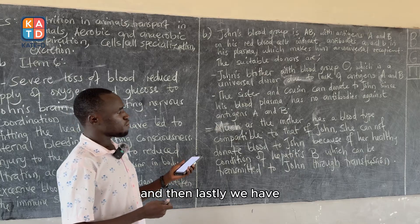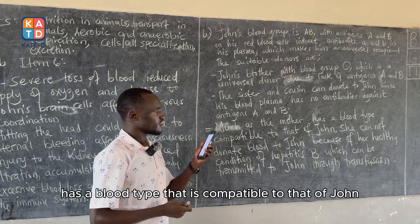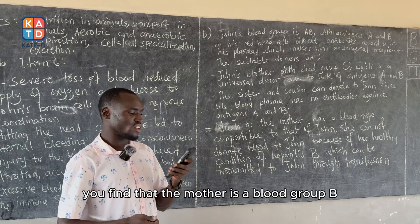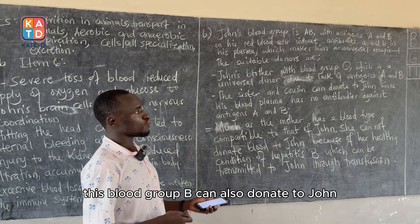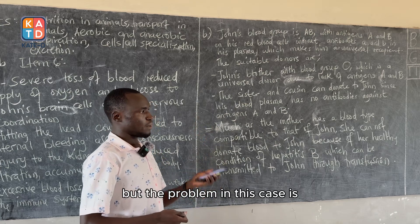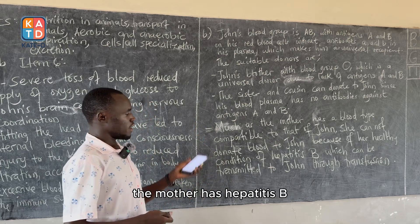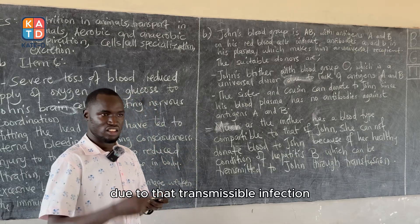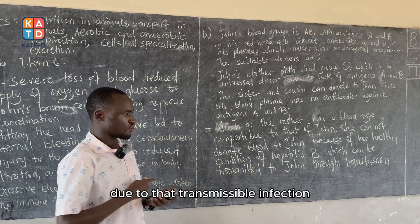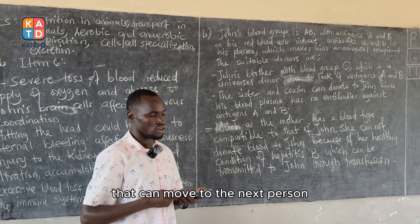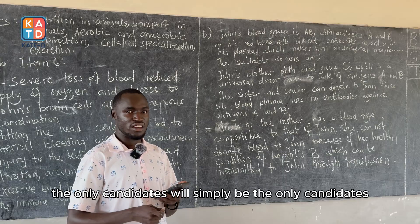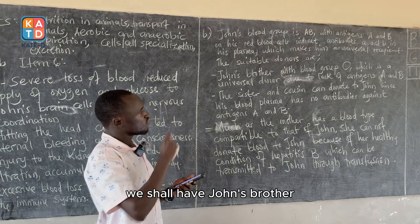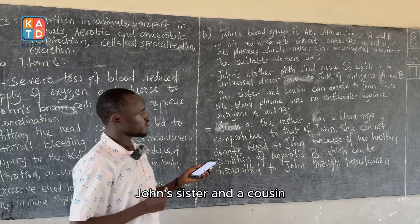Although the mother is blood group B, which is also compatible with John's blood group AB, she cannot donate due to her hepatitis B infection, which is transmittable during transfusion. Therefore, the only candidates who can donate blood to John are his brother, his sister, and his cousin.